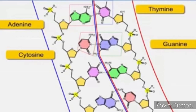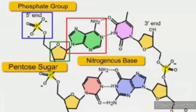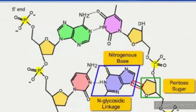The second component is the pentose sugar. In DNA, the pentose sugar is deoxyribose sugar, while in RNA the pentose sugar is ribose sugar. The third component is the phosphate group, that is, phosphoric acid.